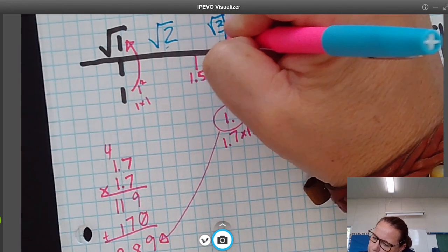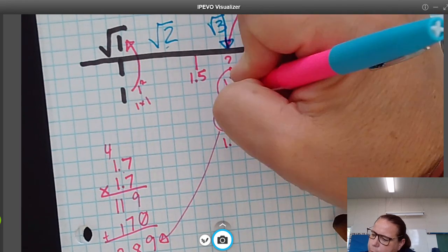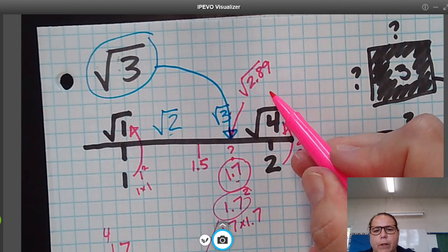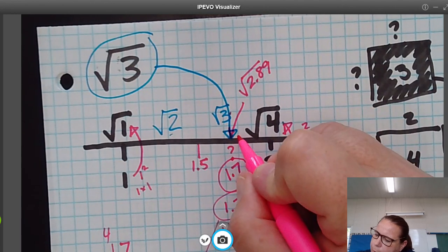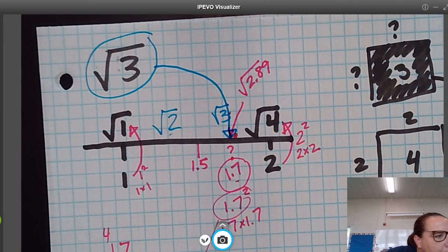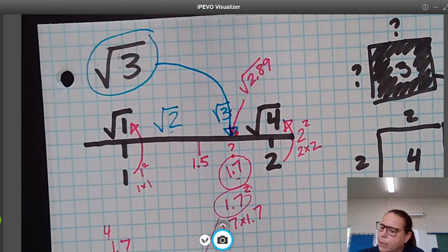We could actually put that on the number line. The square root of 2.89 is 1.7. Well, 3 is more than that. So 3 is actually going to be a little bit over here, a little bit more. And so we would need to test another number just to make sure, but that's pretty close.